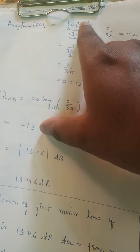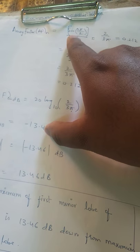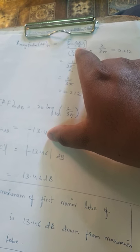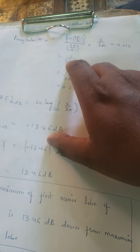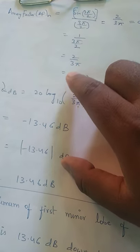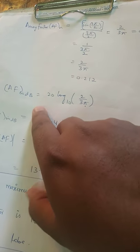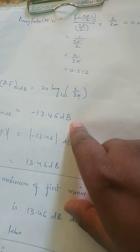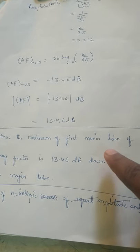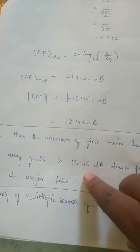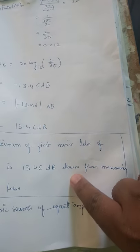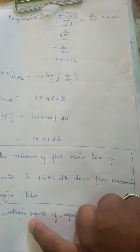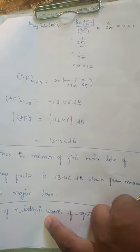What is N·chi/2? We had 3·pi/2 because we are comparing with that. sin(3·pi/2) = sin(270°) = sin(3 × 90°) = minus 1. So |sin(3·pi/2)| = 1, and the result is (2/3·pi) = 0.212. Writing in dB: 20·log10(0.212) = minus 13.46 dB. The minus means downwards. So the maximum of the first minor lobe of the array factor is 13.46 dB down from the maxima at the major loop. Hence it is proved that the N-element array factor is 13.46 dB down from the maximum at the major loop.